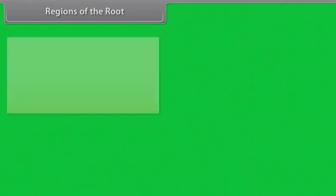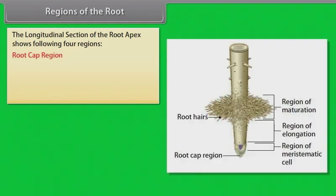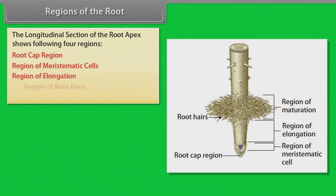Regions of the root: the longitudinal section of the root apex shows the following four regions — root cap region, region of meristematic cells, region of elongation, region of root hairs, and region of maturation.